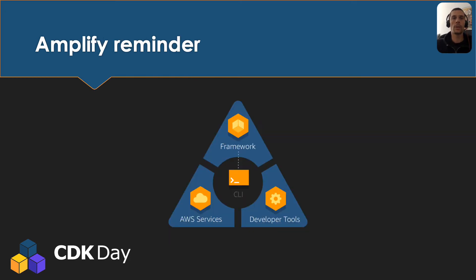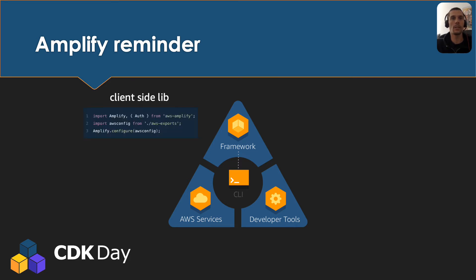Before going into this migration story, let me give a quick reminder around Amplify. Amplify is composed of three main components: a framework providing a client-side library facilitating interaction with AWS services such as API Gateway, Cognito, or AWS AppSync.